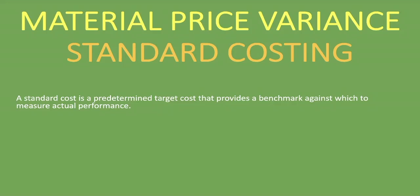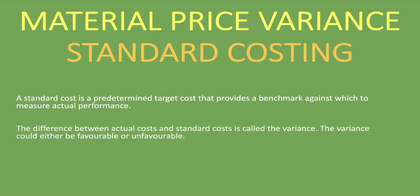A standard cost is predetermined — this is what you anticipate you should be able to incur — and then you use it to measure the actual costs that you incur. The difference between actual costs and standard costs is called the variance, meaning the difference between the two. The variance could either be favorable or unfavorable.